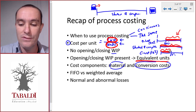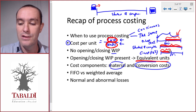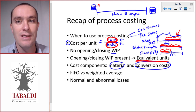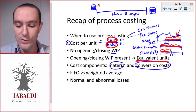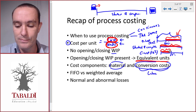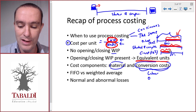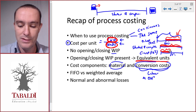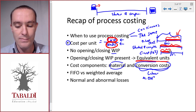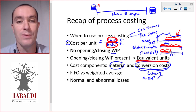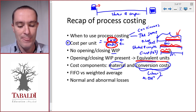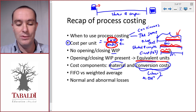The different cost components — material and conversion costs — have to be done separately. The reason for that is materials are usually added at the start of the process, whereas conversion costs are incurred evenly throughout the period. Conversion costs consist of labor and manufacturing overheads, and we can add them together because they are both incurred evenly throughout the period.